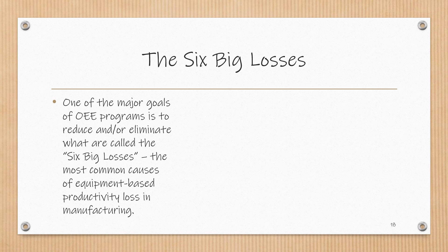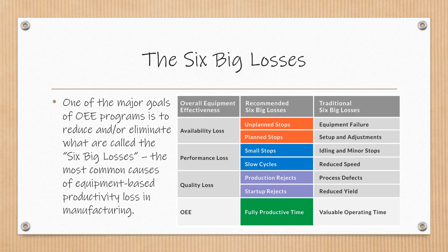One of the major goals of OEE programs is to reduce and eliminate what are called the six big losses — the most common causes of equipment-based productivity loss in manufacturing. A decrease in OEE value represents a loss in fully productive time, attributed to losses in availability, performance, and quality. Availability loss is attributed to unplanned stops and planned stops. Losses in performance can be caused by small stops and slow cycles, while quality loss is often caused by production rejects and startup rejects.